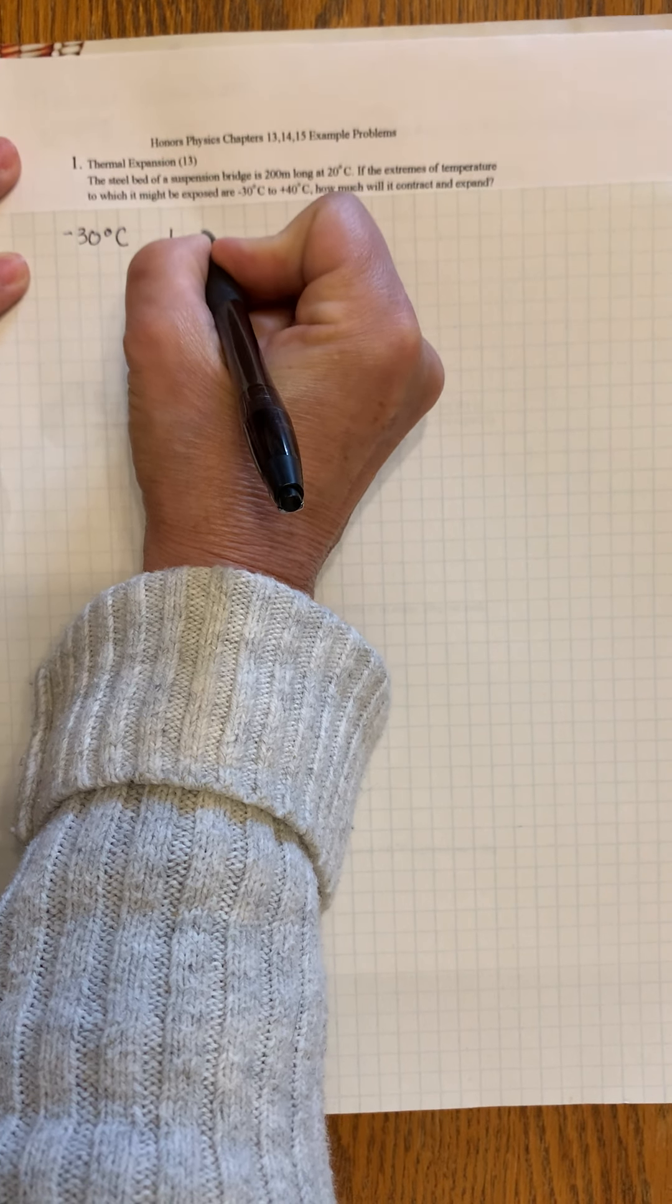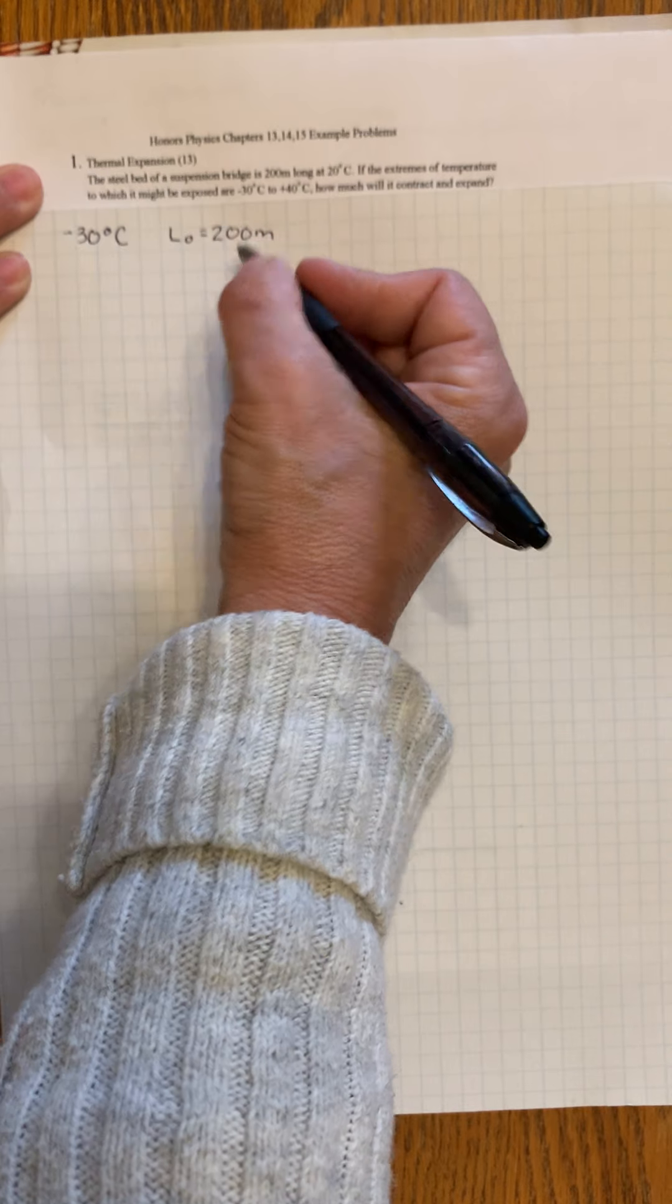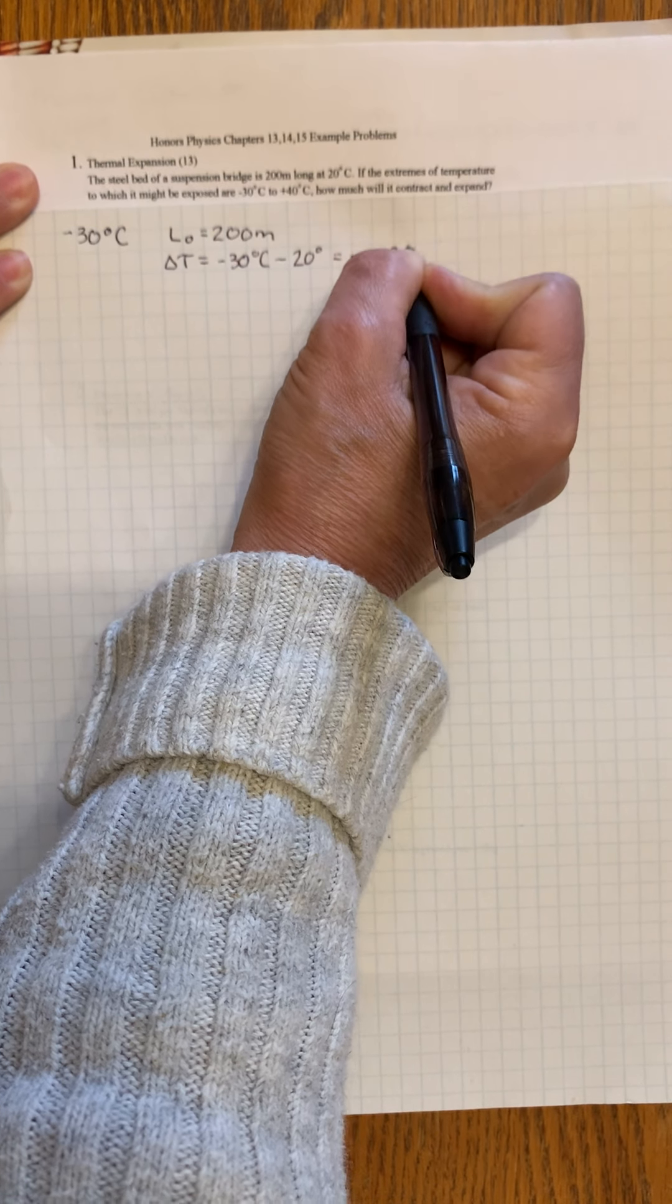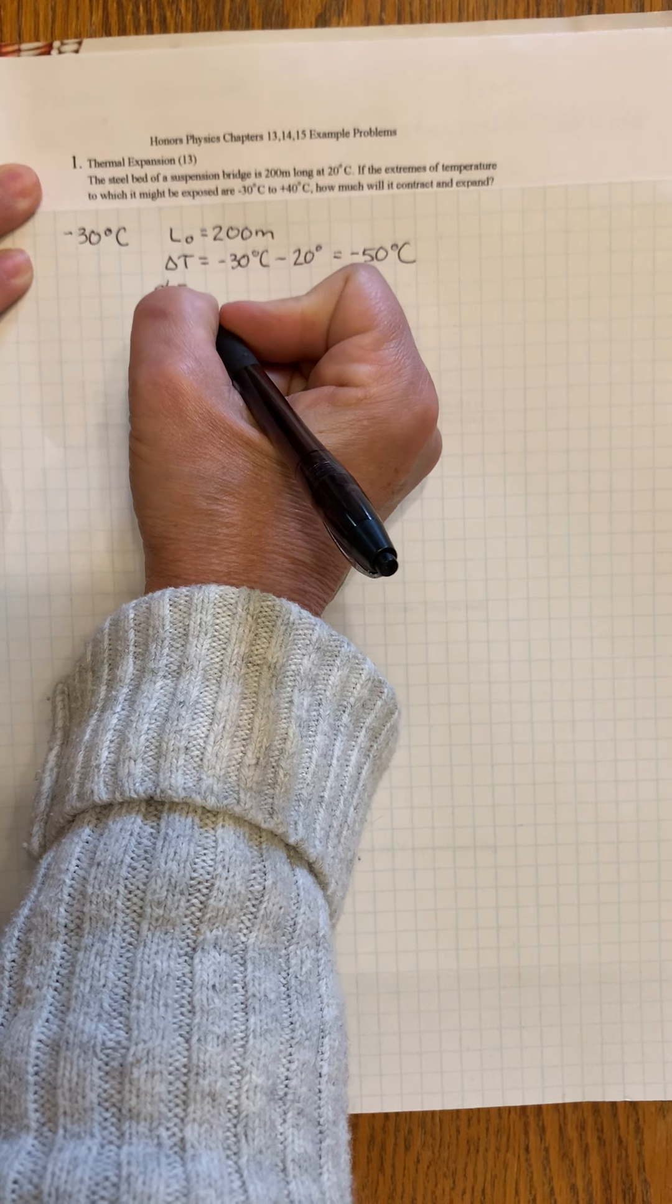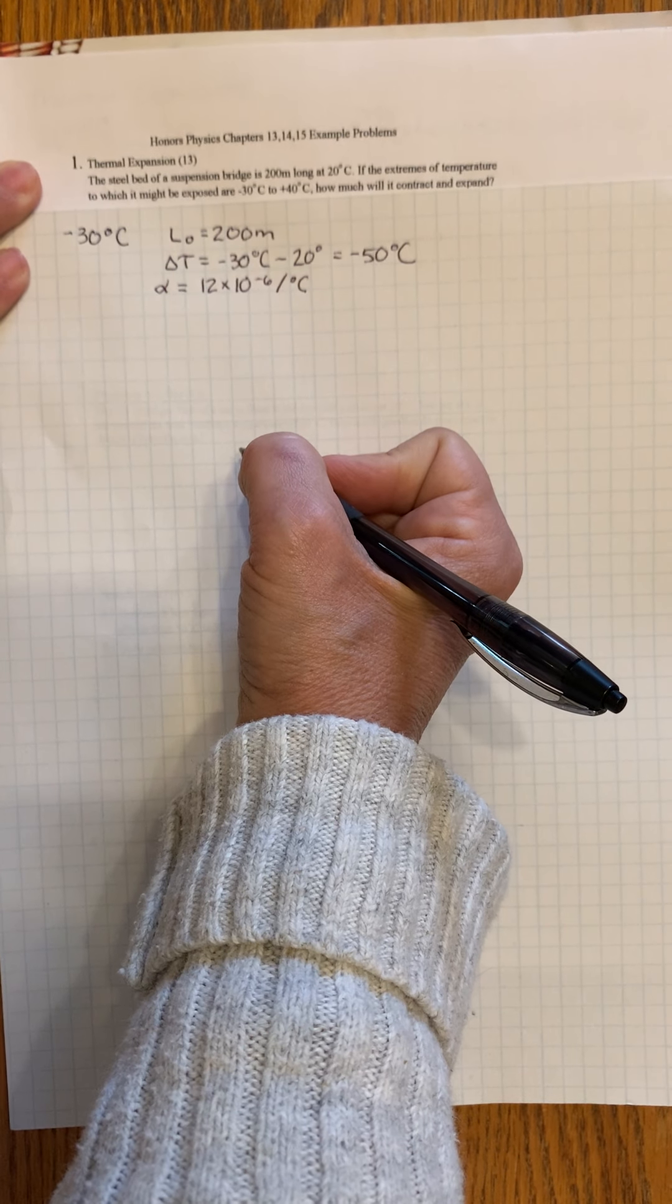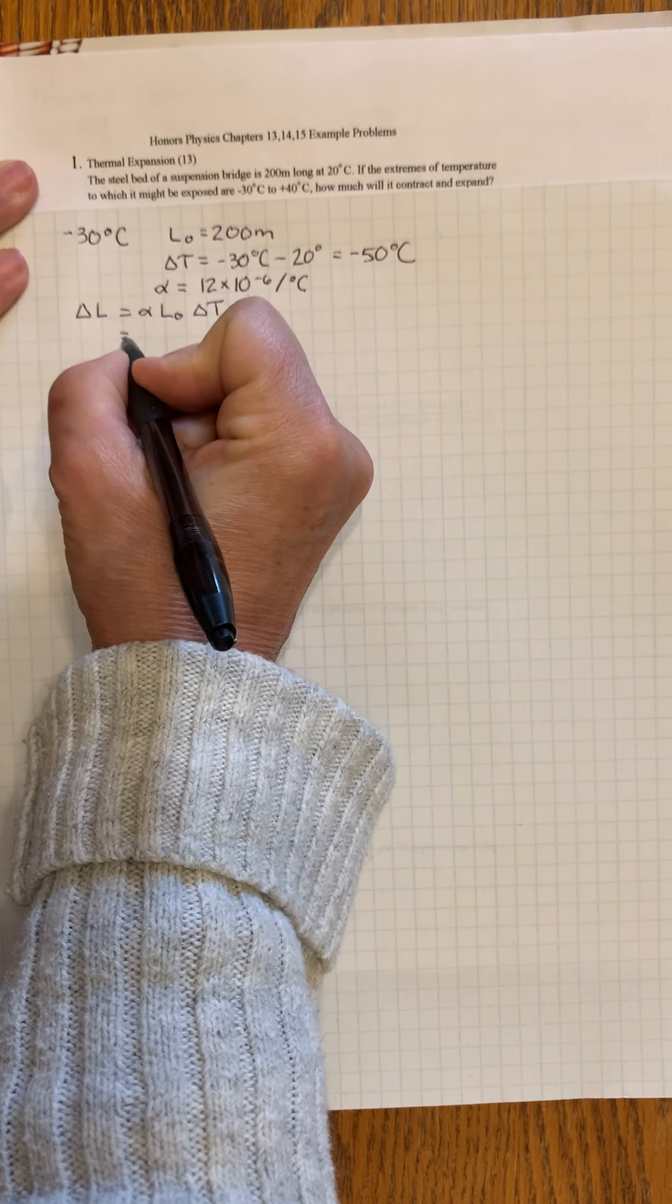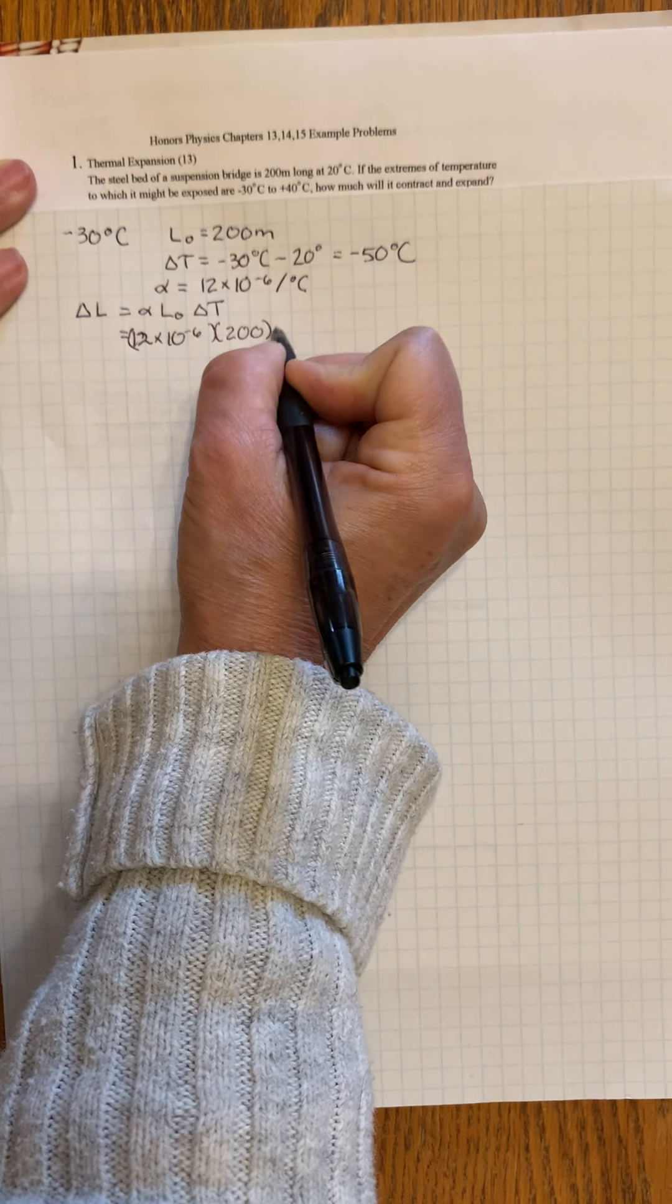Let's start with negative 30 degrees Celsius. We know that it's initially 200 meters long and the temperature initially is 20 degrees Celsius and we're going to go to negative 30. So the change in temperature is final minus initial: negative 30 minus 20, so this change in temperature is negative 50 degrees Celsius. We need to know what alpha is for steel, which is 12 times 10⁻⁶ per degree Celsius.